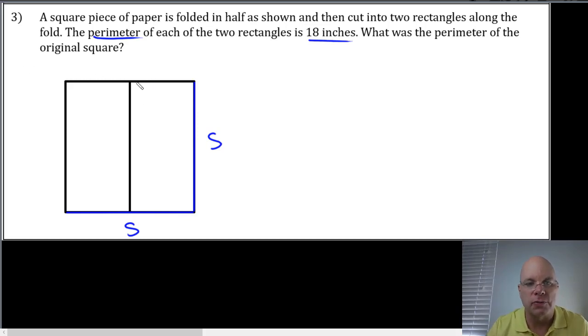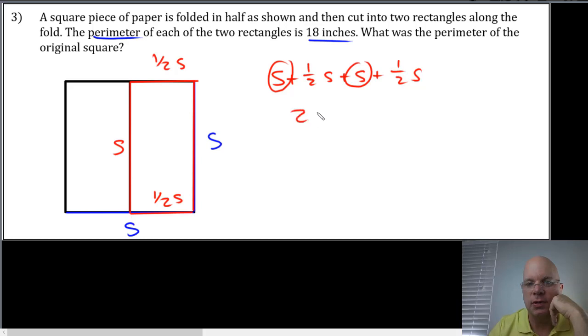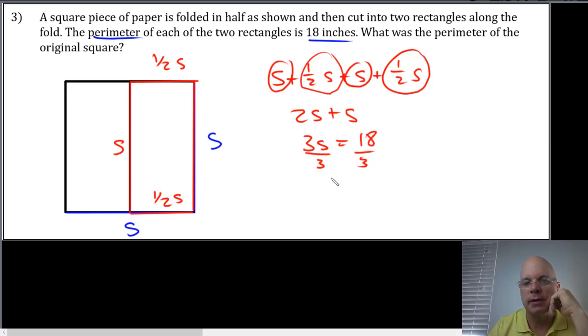Once we cut it into a rectangle, this piece is half of the side, because the rectangle is folded in half. And if I'm just focused on the rectangle after it's been cut in half, this is half of S, and this is S. So I have, if I add these up, I have S plus one-half S plus S plus another half S. Altogether, that's two S's plus half S plus half S is another S. So that's three S equals 18. We divide both sides by three. And S equals six.